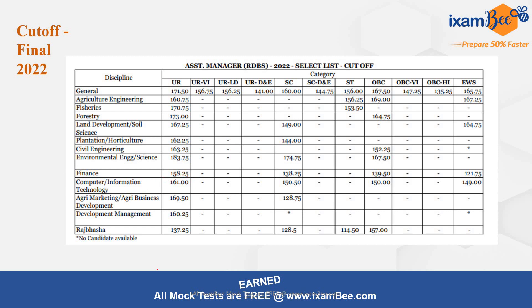The 2022 final cutoff for Computer and Information Technology was 161 out of 250 — comprising 200 marks for mains and 50 marks for the interview. This should give you an idea of how much you need to score if you are appearing for this exam. NABARD is a regulatory body specially dealing with agriculture and rural development.